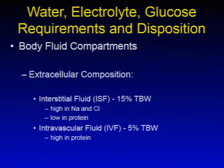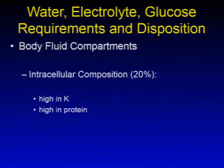The extracellular composition is further broken down into interstitial fluid, or ISF, which is 15% of total body weight. This fluid is high in sodium and chloride and low in protein. Intravascular fluid, or IVF, is 5% of total body weight and is high in protein. The intracellular composition, which is 40% of total body weight, is high in potassium and high in protein.